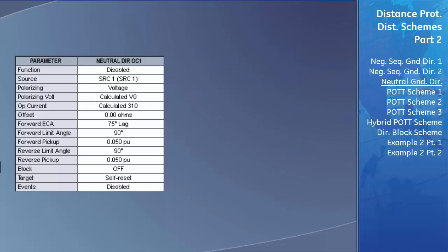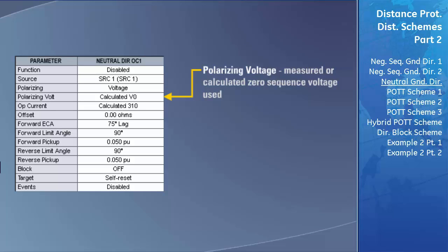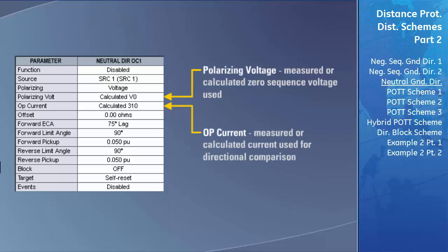If voltage was selected as the polarizing quantity, you need to choose the polarizing voltage field — either the zero sequence voltage calculated from the phase voltages or the measured zero sequence voltage read through the auxiliary input of the DSP module. If the measured voltage is selected, the auxiliary voltage input needs to be configured under the same sources as the phase voltage inputs. In the operating current field, select which zero sequence currents will be used: either the zero sequence current calculated from the phase currents or the zero sequence current measured by the DSP. If the measured current is used as the operating current, the voltage must be used as the polarizing vector.